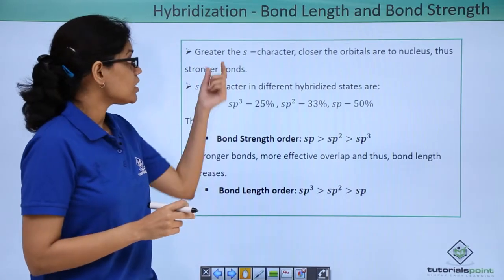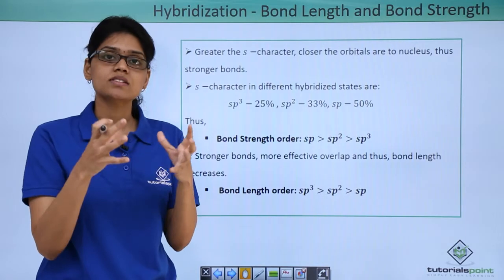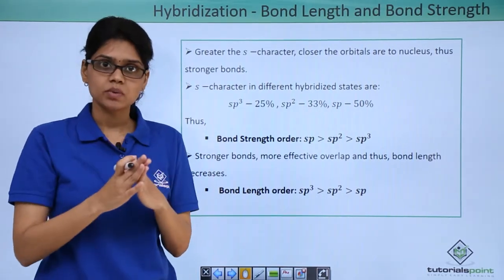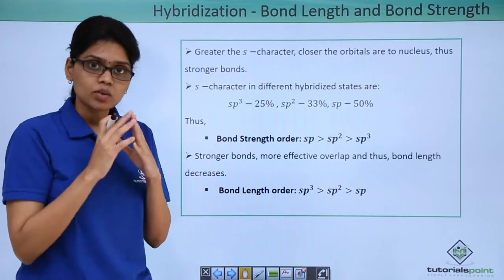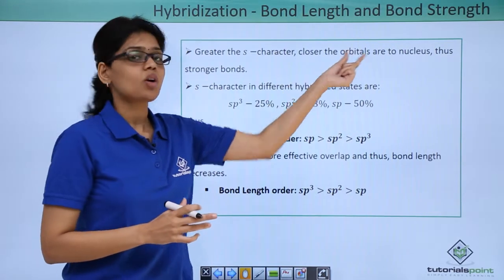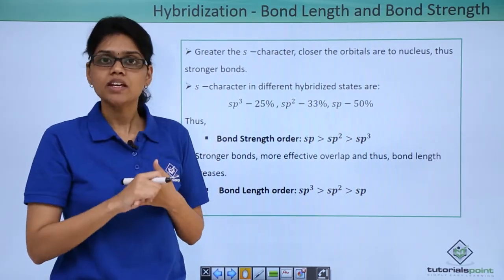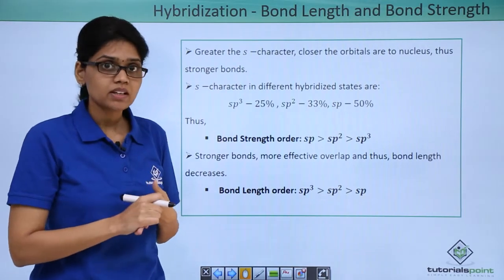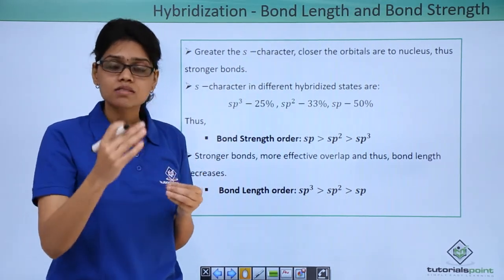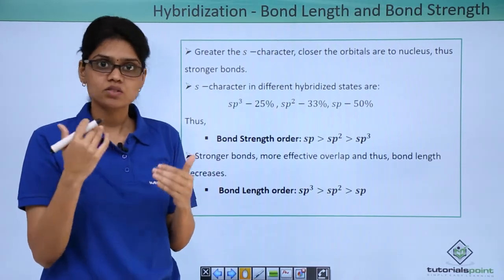What is bond strength? Bond strength is essentially how tightly the bonds are associated or bonded to each other and how effective the overlap is between the different atoms. It's important to know that greater the s character, closer the orbitals are to the nucleus, and thus the overlap is very effective. If you have greater s character, obviously the bond strength will be much stronger.